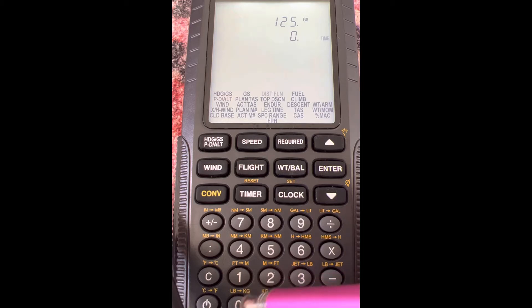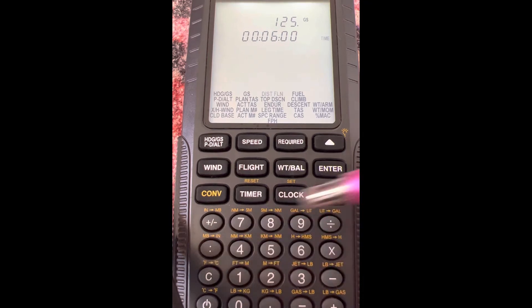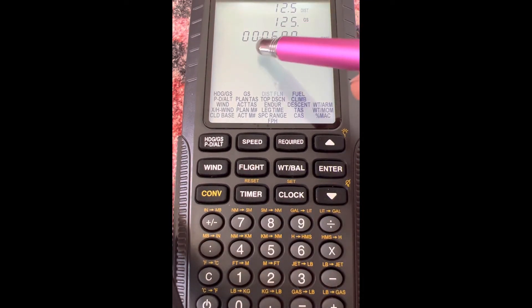So we'll enter zero zero, then we'll hit the colon, and then we'll put in a six, colon, enter. So that's zero hours, six minutes, and zero seconds. When we press enter,